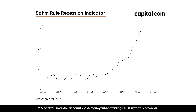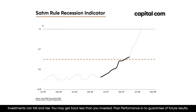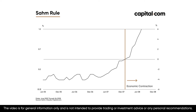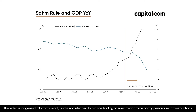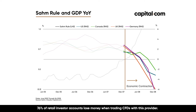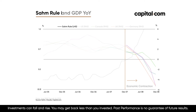In April of 2008, this line that you see here moved up to cross above 0.5%. This triggered something called the SOM rule. Following this event, economic growth around the world began to plummet. Whether we look at the United States, Canada, the UK, or Germany, most if not all developed economies witnessed steep contractions in the year that followed — in other words, a global recession took place.